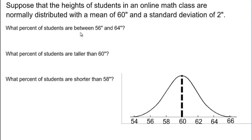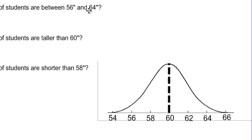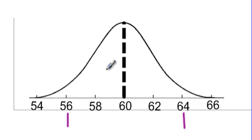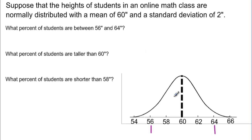The first question says: what percent of students are between 56 inches and 64 inches tall? 56 inches is two standard deviations to the left of the mean, and 64 inches is two standard deviations to the right of the mean. With our empirical rule, we know that two standard deviations to the left and to the right contains 95% of the population. So 95% of students taking the online math class are between 56 and 64 inches tall.